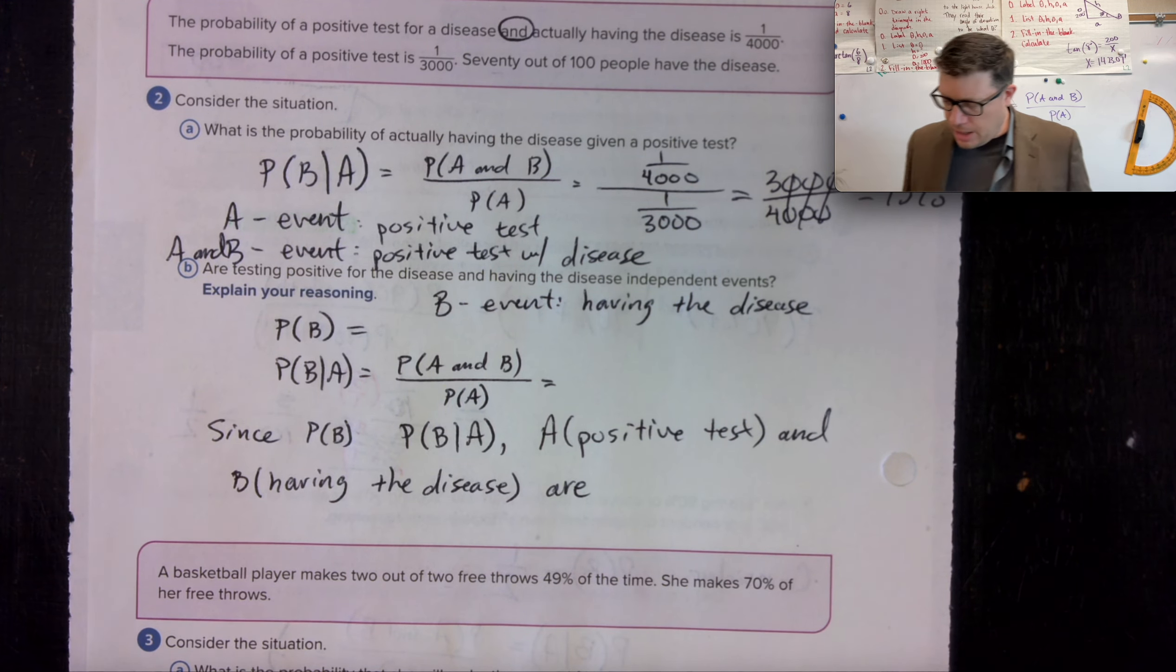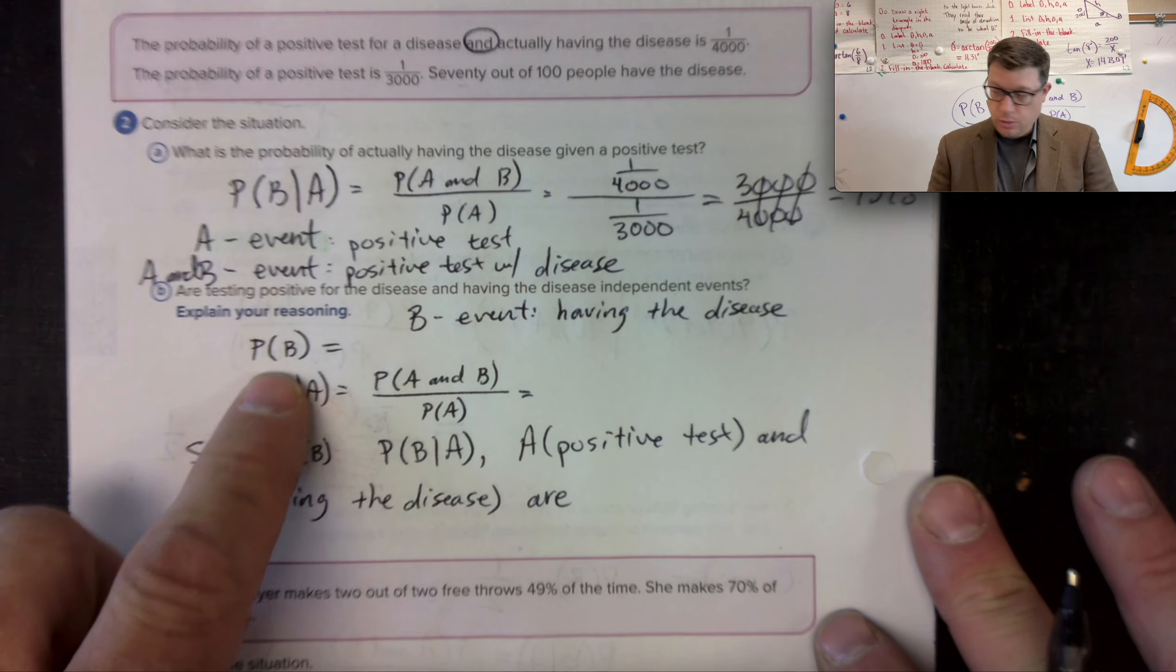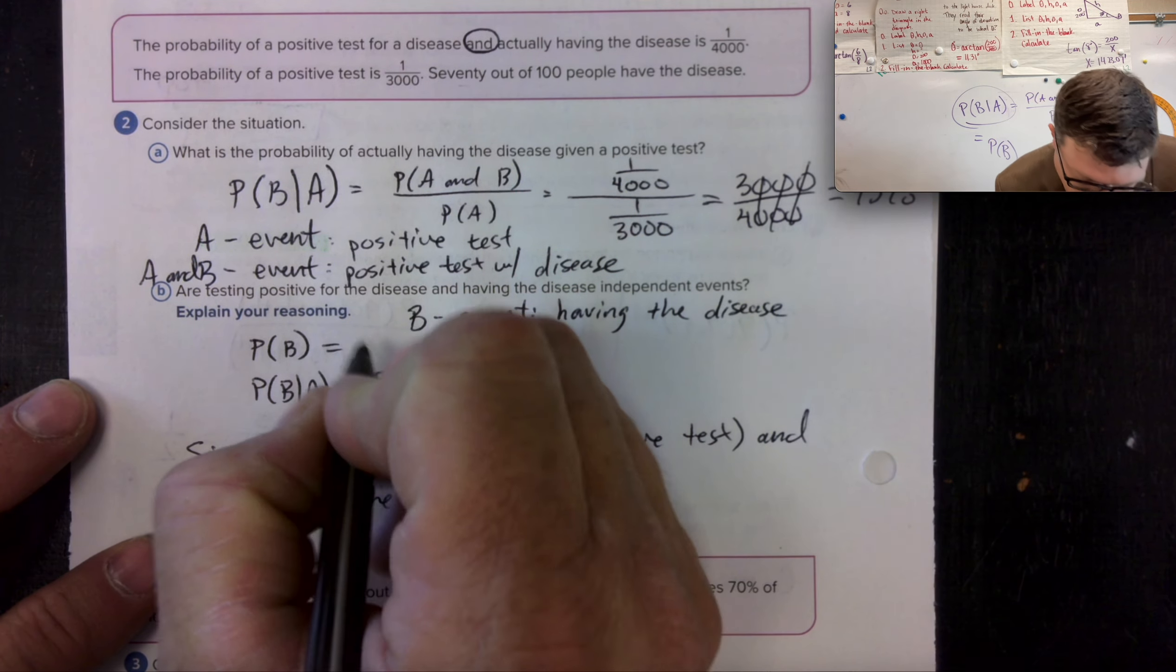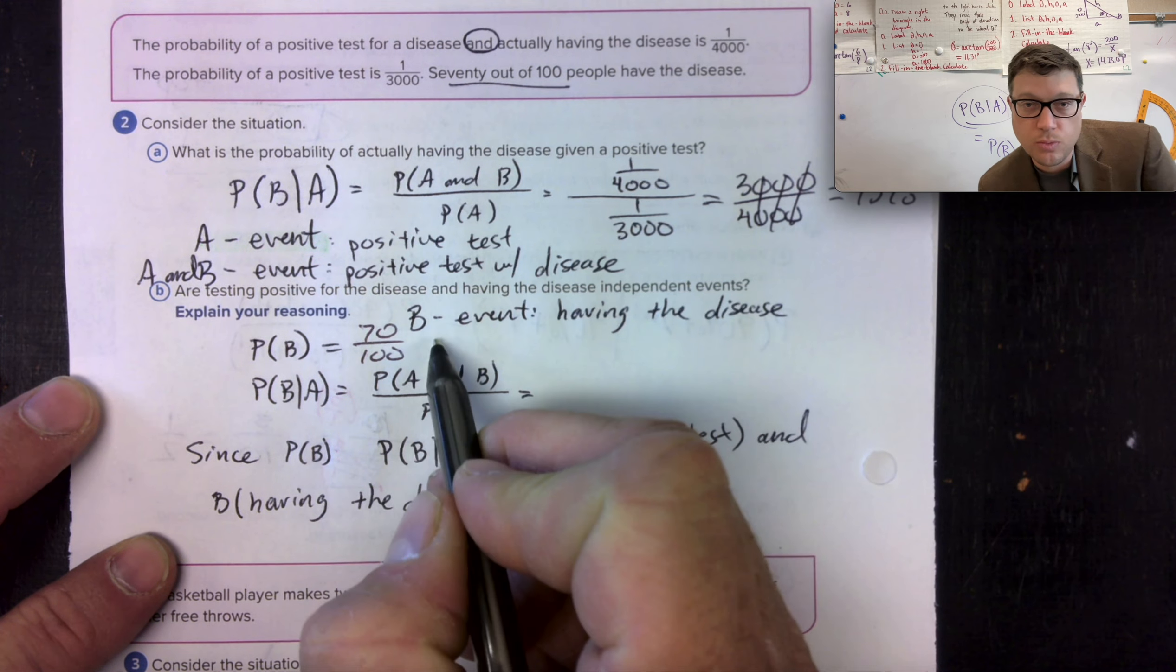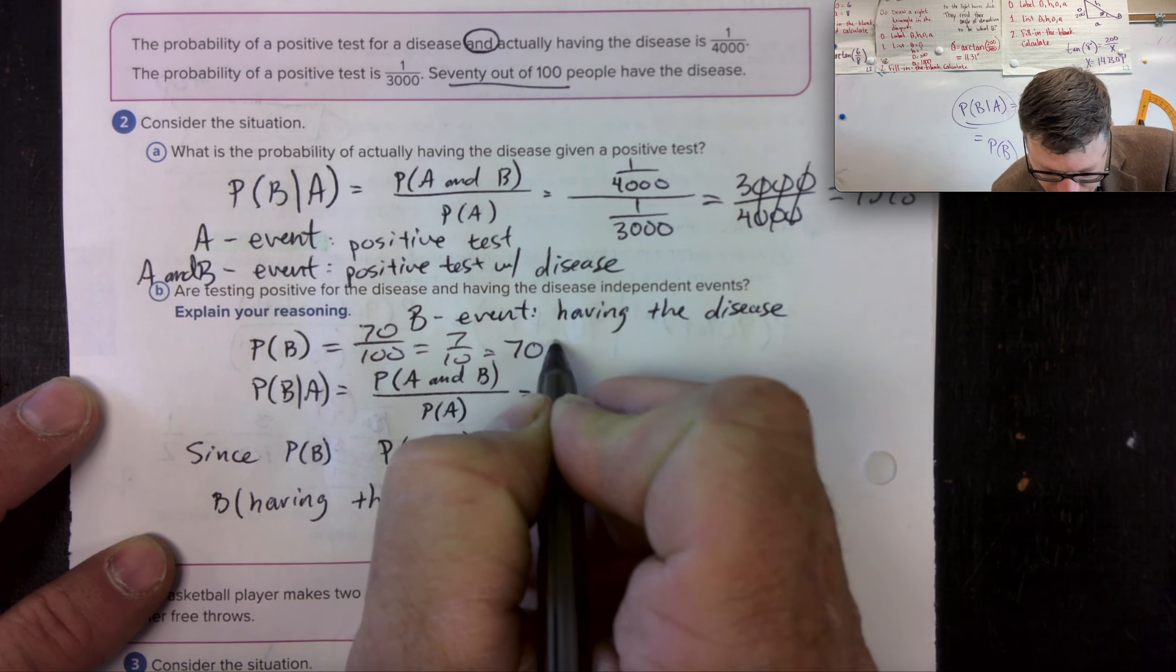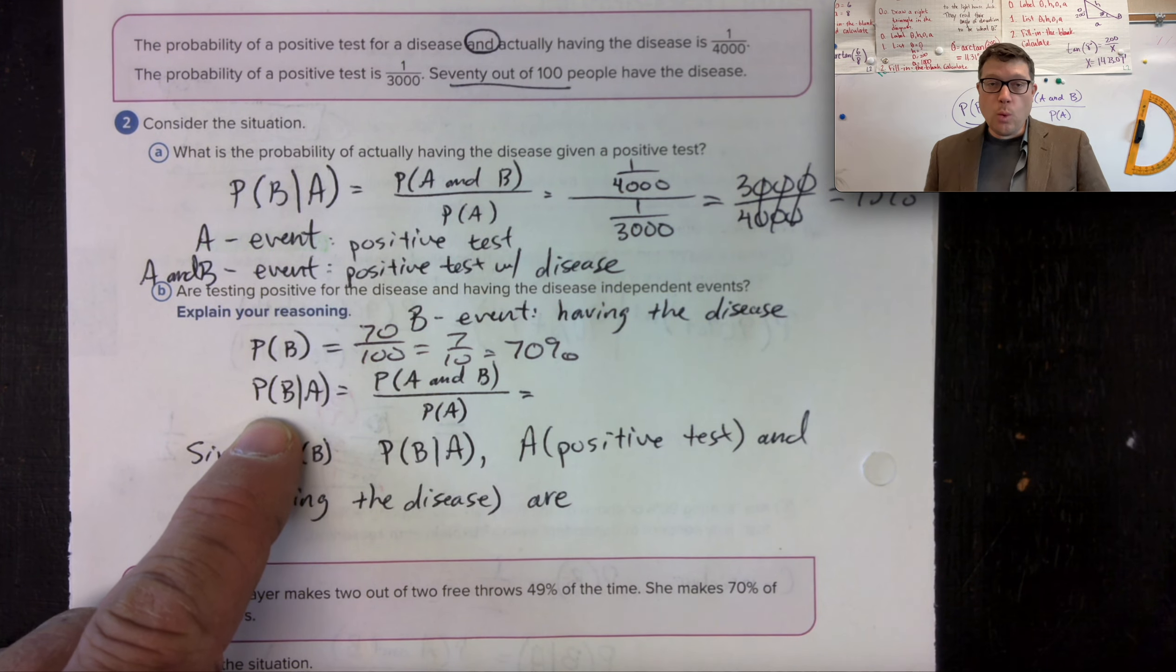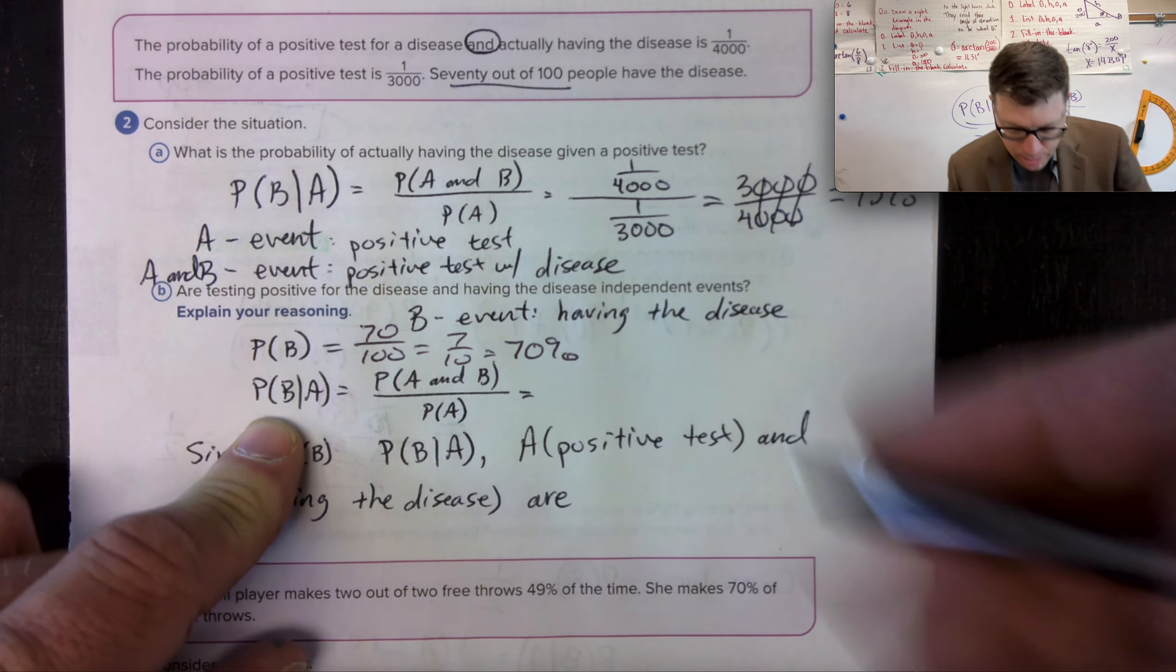So the probability of B, of actually having the disease—B is having the disease—is 70 out of a hundred, or seven out of 10, or 70%. Meanwhile, the probability of having the disease given you had a positive test is 75%.